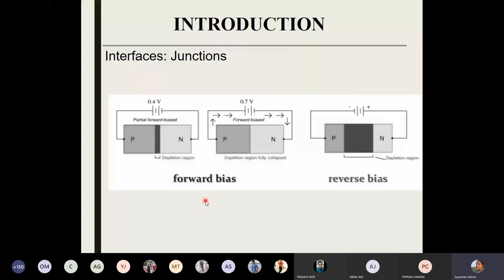At that point the current suddenly shoots up and the diode characteristics come into picture. In forward bias, the bottom line is that the depletion region shrinks. In reverse bias, the battery supports the barrier potential itself rather than the carriers — thus the depletion region widens further. Is this clear? How the depletion region changes with the voltage applied across the diode with the biasing?